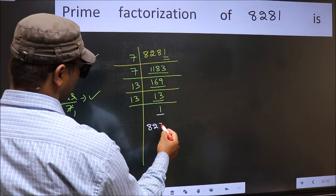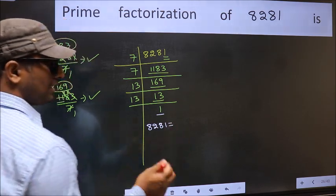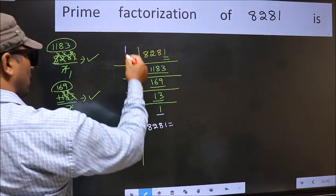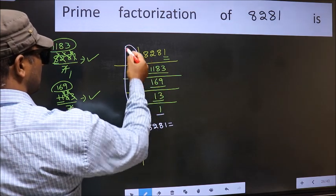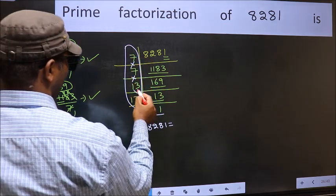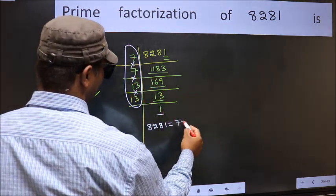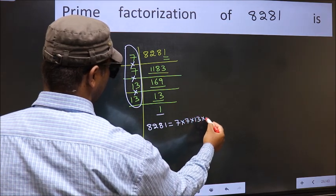So the prime factorization of 8281 is the product of these numbers. That is 7 into 7 into 13 into 13.